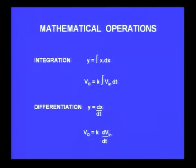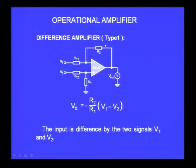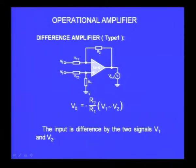We will also see how integration and differentiation can be performed. I showed you one type of difference amplifier in the previous lecture — type 1, as shown on the screen. It has two inputs V1 and V2, with resistors R11, R12, R1, and R2 connected in the circuit. We derived that the output voltage equals minus R2 by R1, times the quantity V1 minus V2, where R2 is the feedback resistor and R1 is the input resistor.